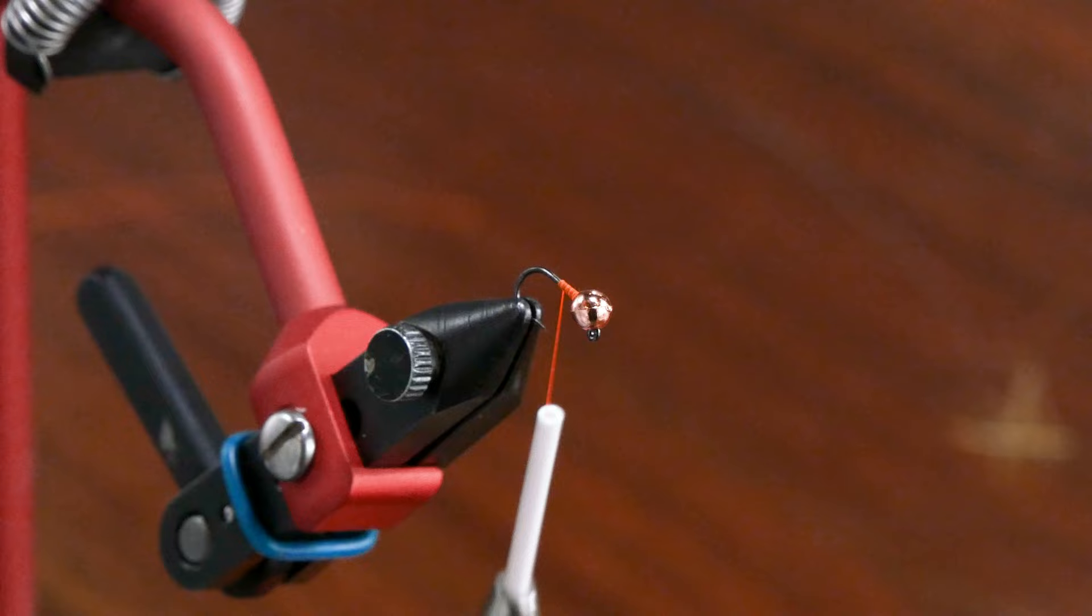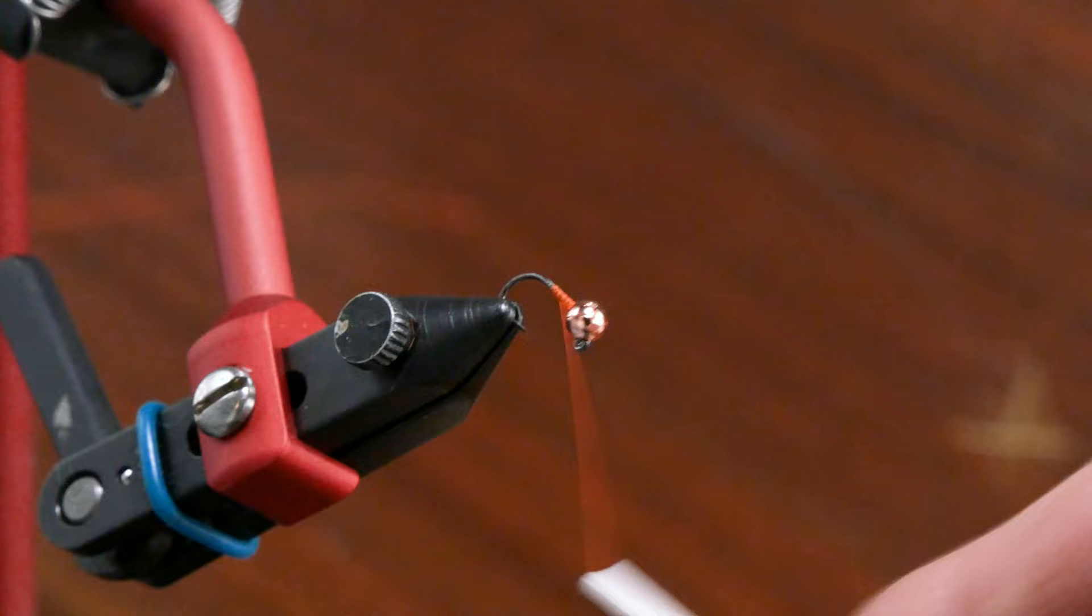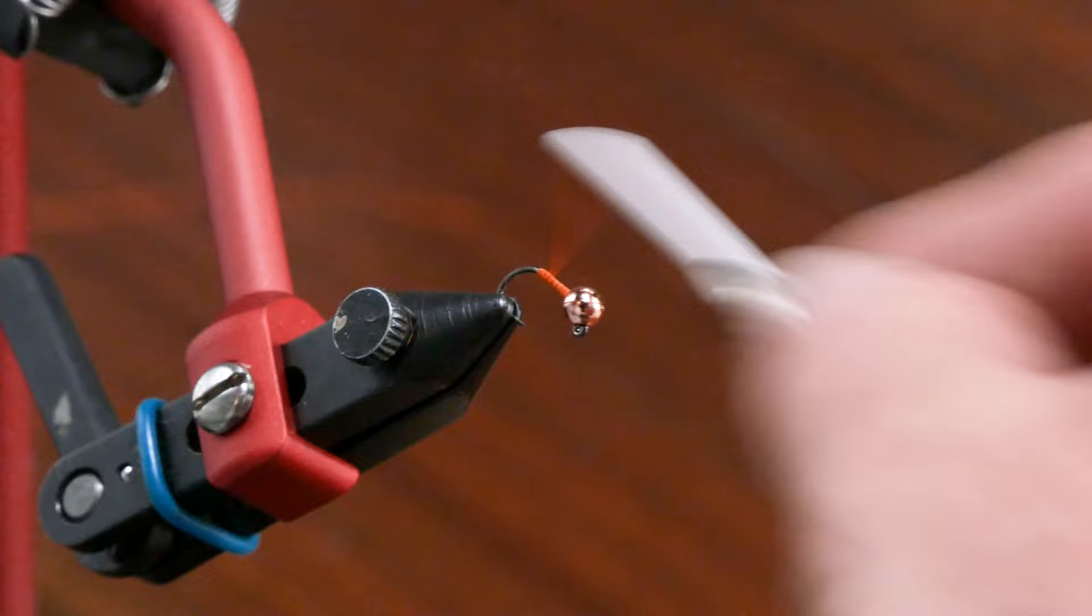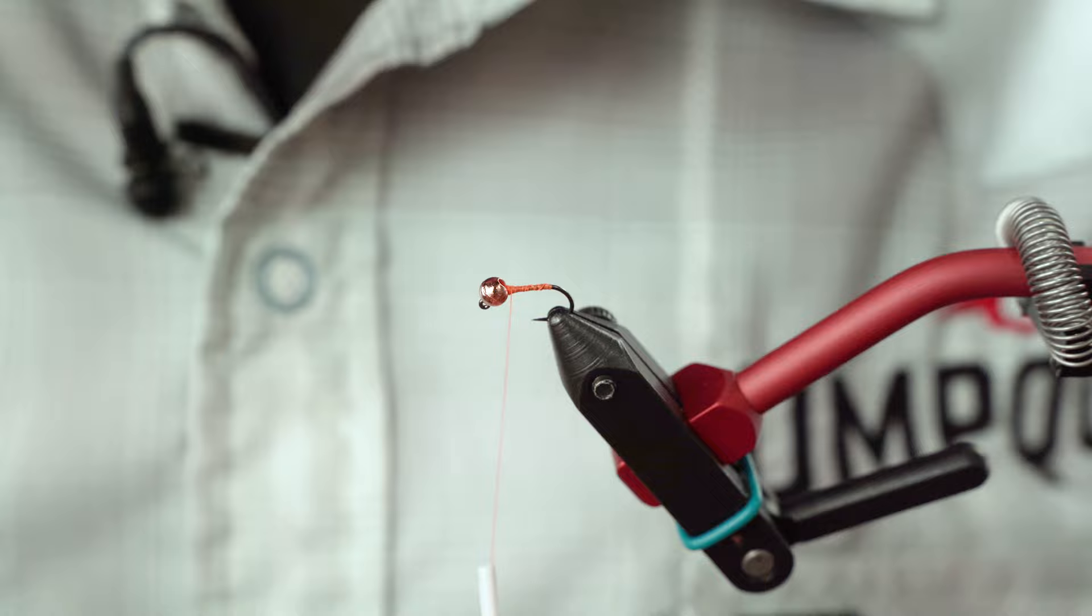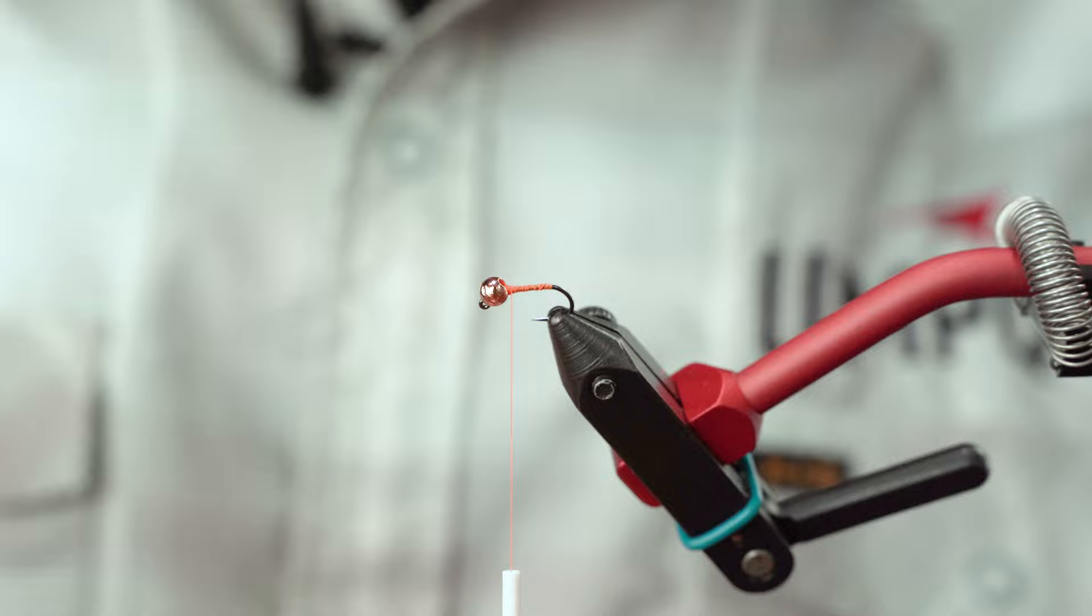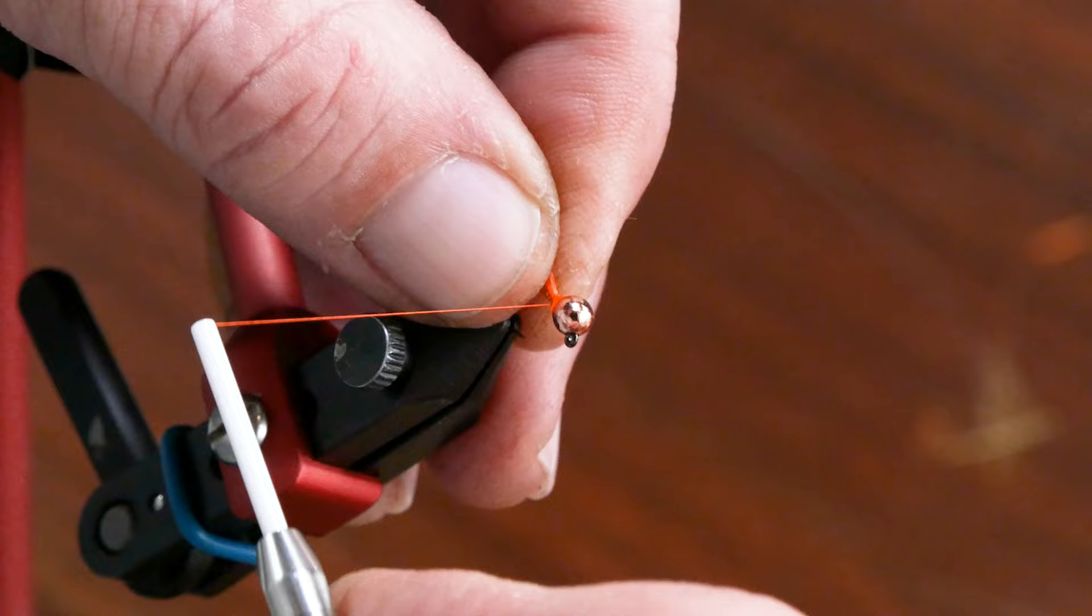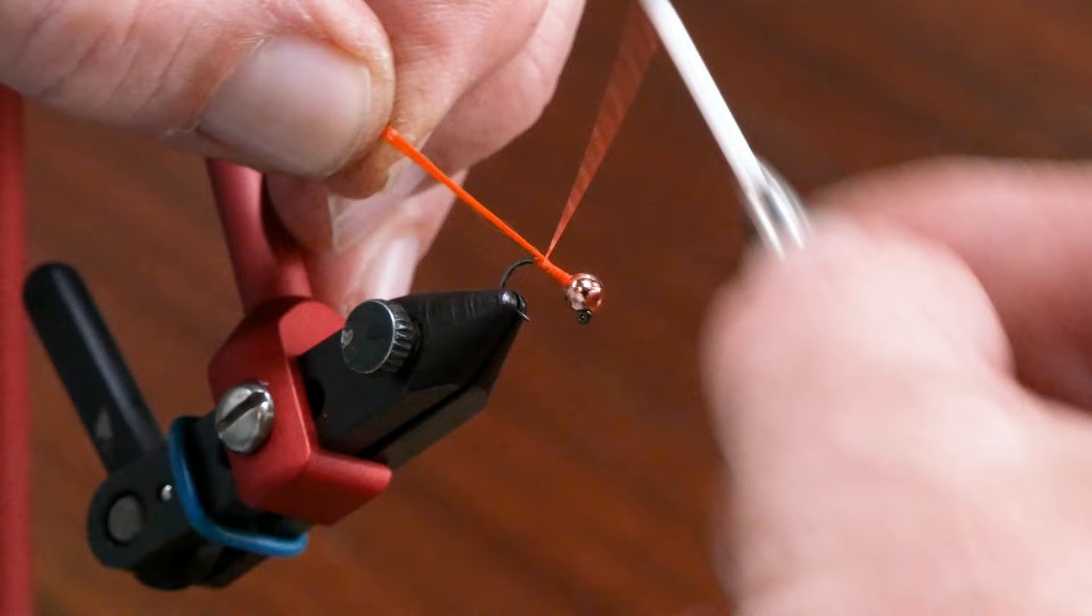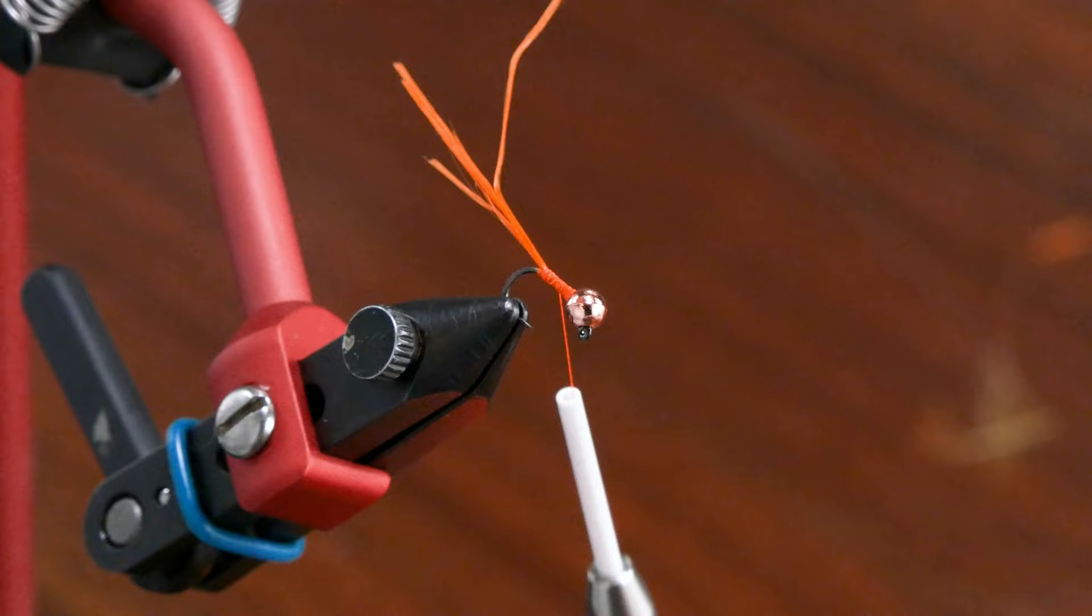So we're going to do our thread wraps all the way back to the hook bend and tie a tail in. This is a tag nymph. The blowtorch is a very unique pattern. We're going to tie in the tag section of this nymph, which is going to be some Glowbrite No. 5. And if you go over to Devin's website, Tactical Fly Fisher, he does have a blog entry on the blowtorch. It's actually a really cool story. I recommend going to check it out. He gives you some insight on how he came about it, how he found it, how it was introduced to him and how he modified what he saw to his liking.